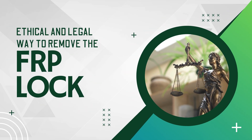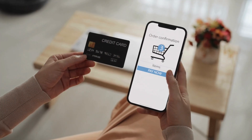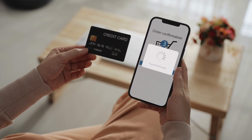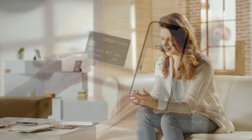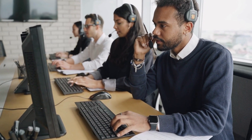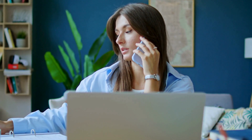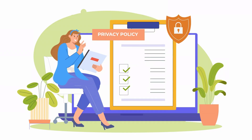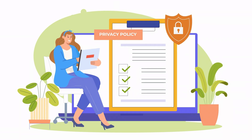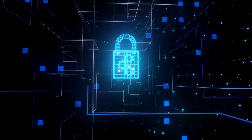Another ethical and legal way to remove the FRP lock from your phone is to contact the original owner and request their help. If they can provide the necessary login details, you can unlock the device easily. If you purchased the phone from a legitimate source, like a retail store or online marketplace, reach out to the seller for assistance. They may have the original receipt or necessary information to help you unlock the device. Additionally, using the official methods provided by the phone manufacturer or carrier, such as account recovery options, can help you regain access without breaking any rules. Following these steps ensures you stay within legal boundaries while unlocking your device, maintaining the integrity and security of your phone.